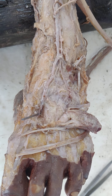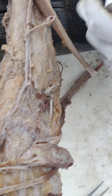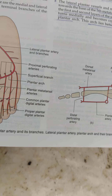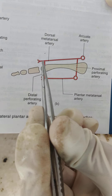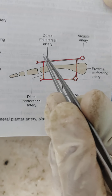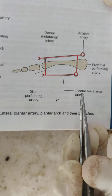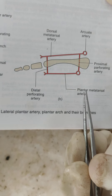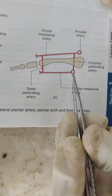The dorsal metatarsal arteries have perforating branches — proximal perforating branches — into the second, third, and fourth metatarsal spaces. On the dorsum side this is the arcuate artery, and on the plantar surface this is the plantar metatarsal artery, a branch of the lateral plantar artery, into the second, third, and fourth metatarsal spaces.